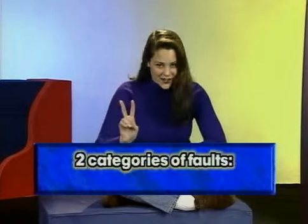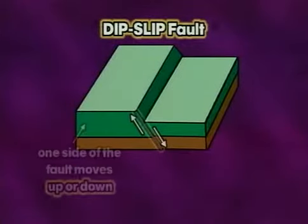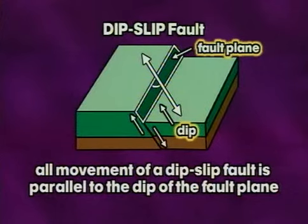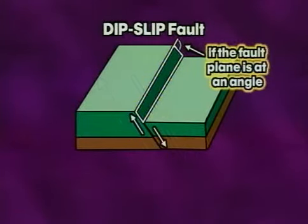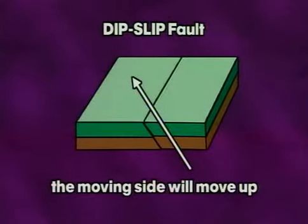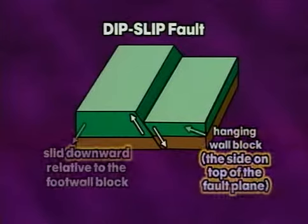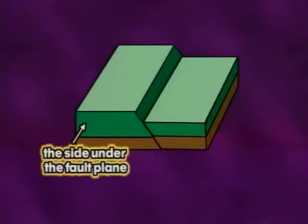There are two categories of faults: dip-slip faults and strike-slip faults. In a dip-slip fault, one side of the fault moves up or down relative to the other side — all movement is parallel to the dip of the fault plane. The moving side slides up or down parallel to the fault plane. In this diagram, the hanging wall block slid downward relative to the foot wall block. Faults with this type of movement are called normal faults, which are usually the result of sections of rock moving away from each other.